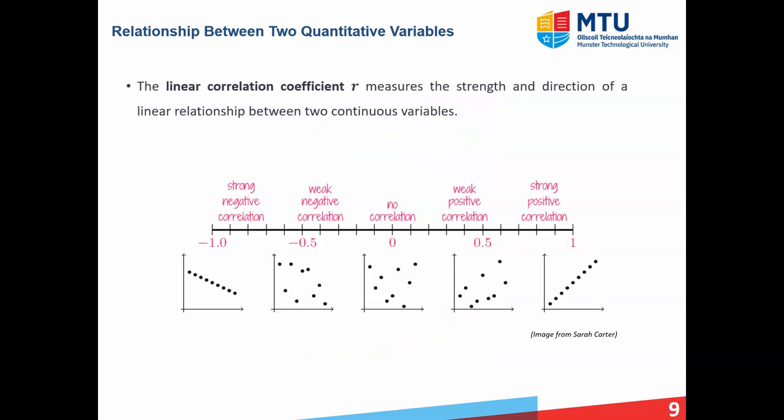With scatter plots, we can visually determine if there's a linear relationship or some type of relationship. But there is a more quantitative approach to measure the strength of that relationship. To measure the strength of a linear relationship, we have the linear correlation coefficient, denoted R. It measures the strength and direction of the linear relationship between two continuous variables. Its range is from minus one all the way up to plus one — no smaller than minus one, no bigger than plus one. A correlation coefficient of zero means there is no relationship between your data.